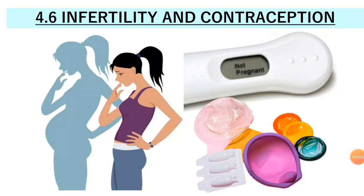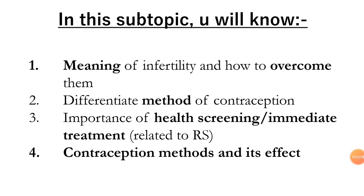Hi everyone, today we are going to learn about 4.6 infertility and contraception. These are the things that you are going to learn about: infertility and how to overcome it, differentiate the methods of contraception, importance of health screening, immediate treatment related to the reproductive system, and contraception methods.